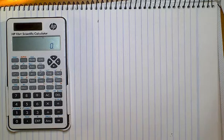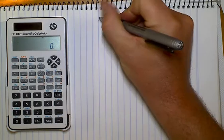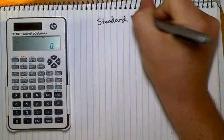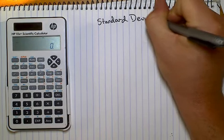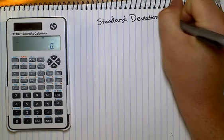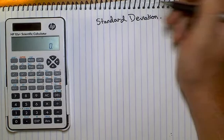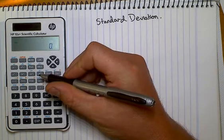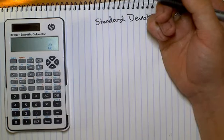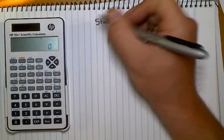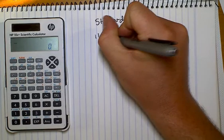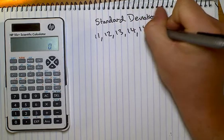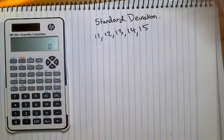What we're going to be doing now is looking at the standard deviation, in this case with the HP 10S calculator. What we're going to do first of all is just decide on a short number of scores to use. In this case we're going to use 11, 12, 13, 14 and 15. They could be ages, weights — it doesn't matter.